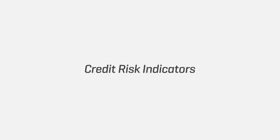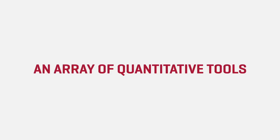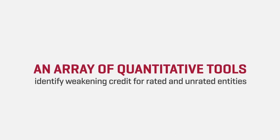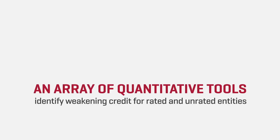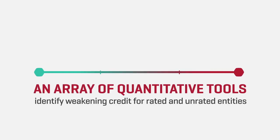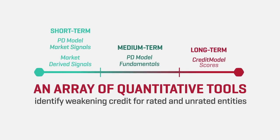An array of quantitative tools helps identify weakening credit for both rated and unrated entities. This includes short, medium and long-term measures.